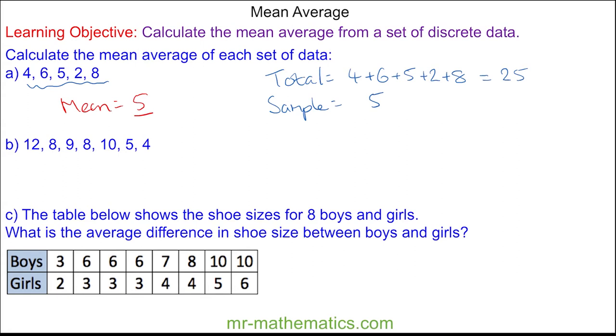For question b, we work out the total by adding up each value of data, which is 56. The sample size is 7, so the mean average would be 56 divided by 7, which is 8.